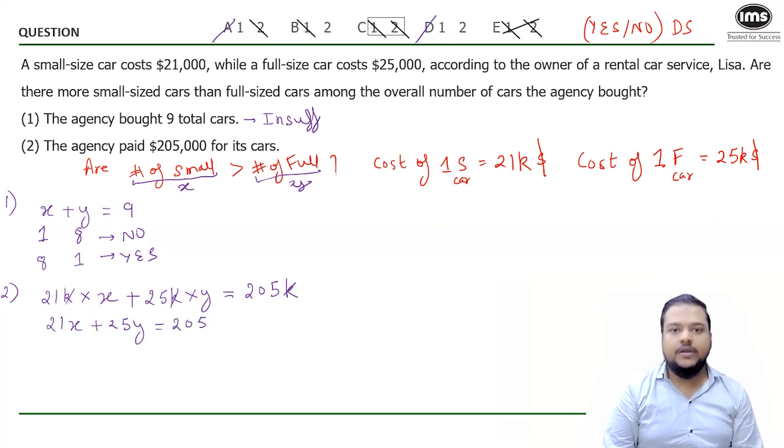Always remember, if you have a single linear equation with two variables, there might be a possibility that this equation has only a unique solution. How will you try that? Always look at the constraints on the variables that you have. Observe, X and Y are what? They are number of cars. Have you ever bought 1.32 cars? Have you ever bought minus 900 cars? No.